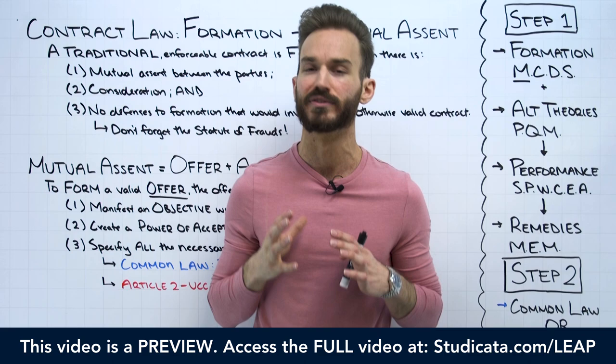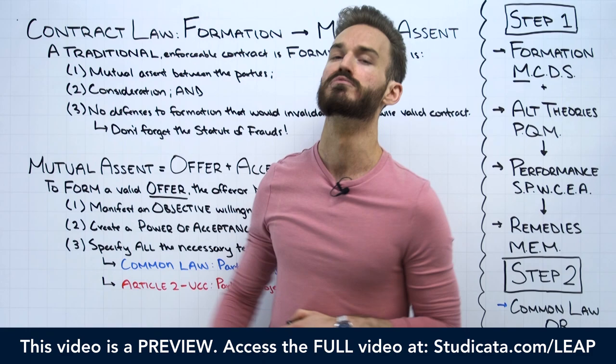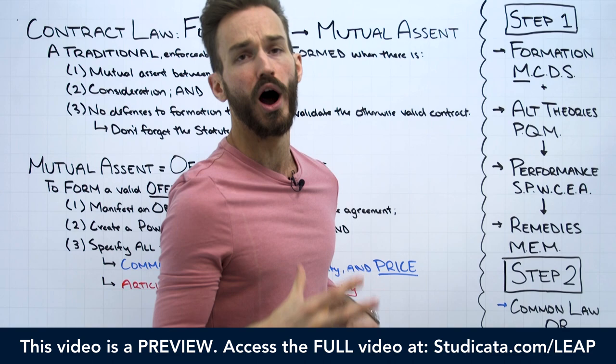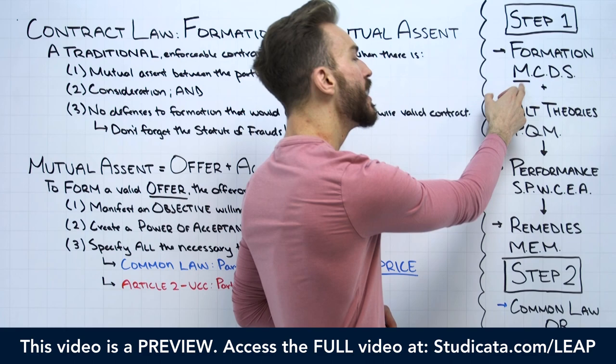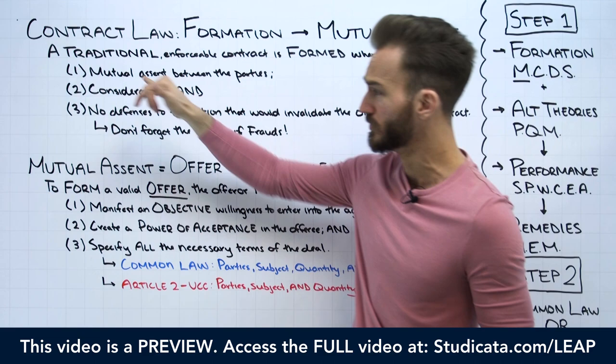In this lesson, we want to start with our discussion of mutual assent. In case you're wondering, this is what the M in our big picture contract flow stands for. In our mnemonic, 'my cats do sneak,' the M is for mutual assent. We need mutual assent between the parties.